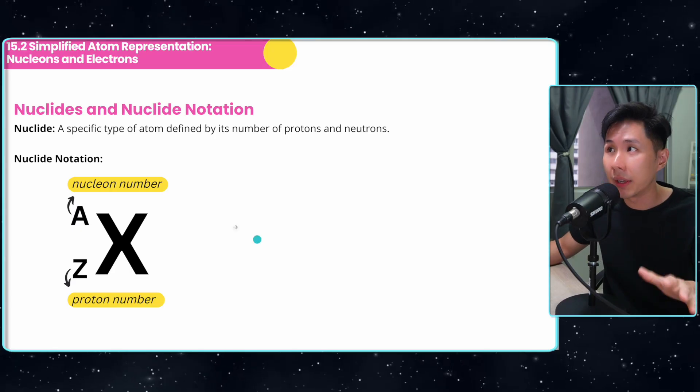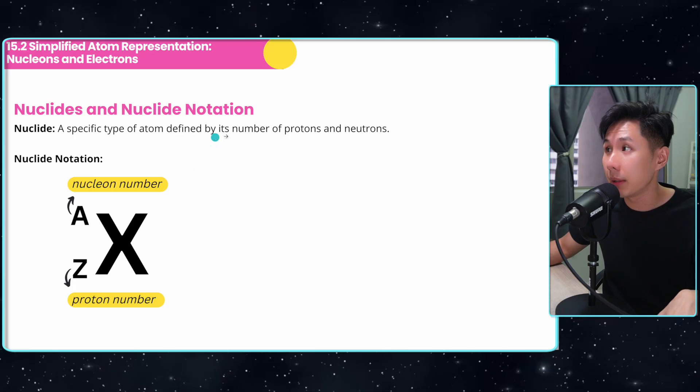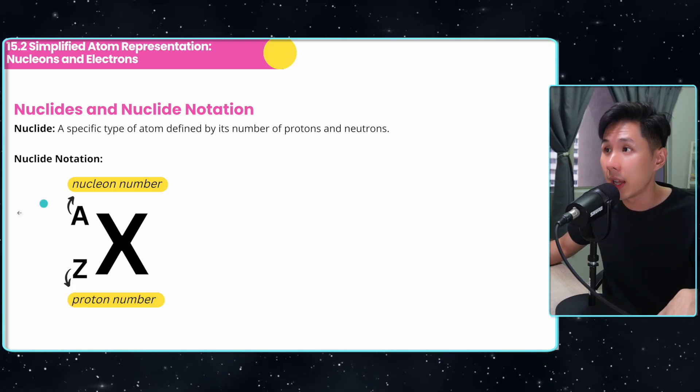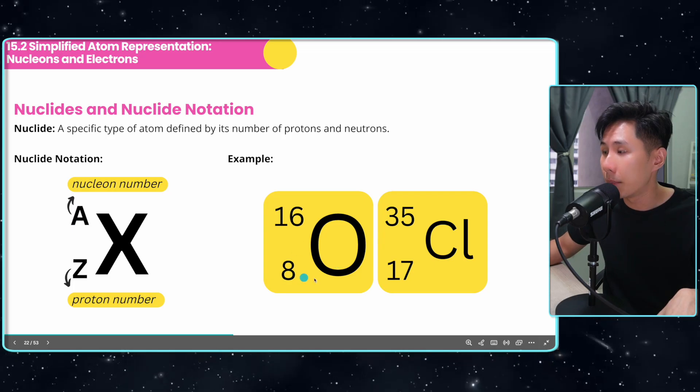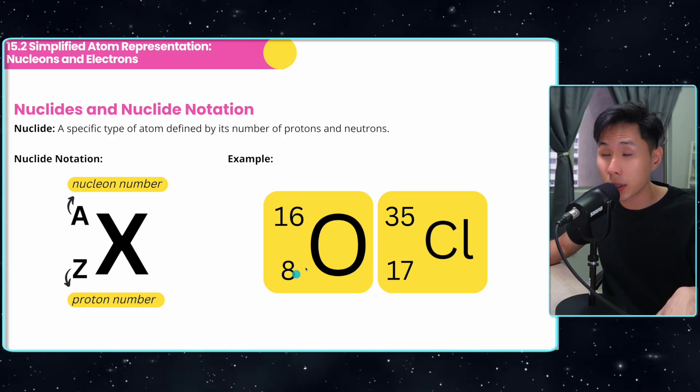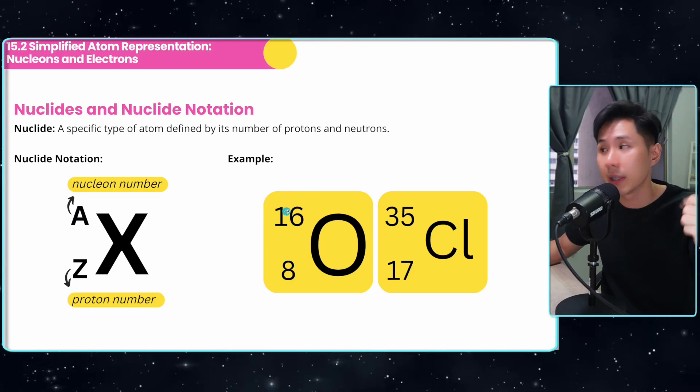Now you also need to know about what nuclides and nuclide notation is. A nuclide is a specific type of atom defined by its number of protons and neutrons. This is how the notation looks. The numbers here represent the number of protons and the number here represents the number of nucleons, which is the sum of protons and neutrons.